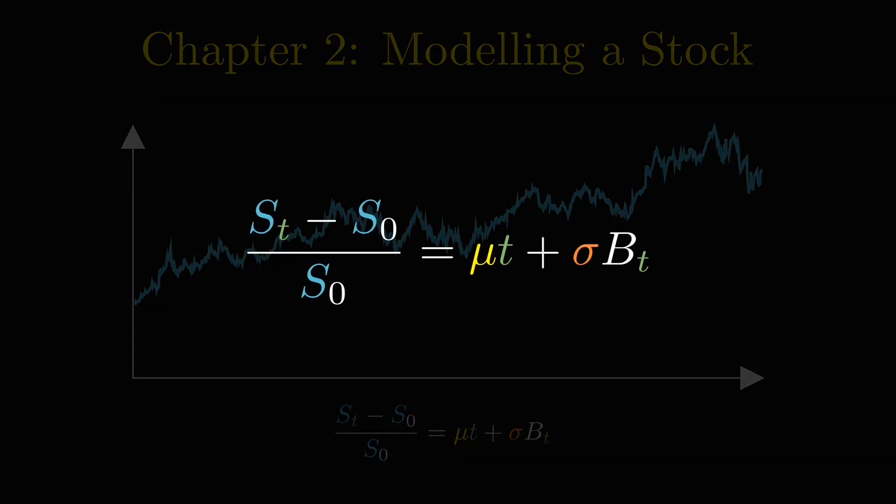We can rewrite this equation to show the percentage change at time t instead. Here, delta S_t represents the change in S_t in a very short interval after time t. When we take the limit as this interval gets smaller, we arrive at the stochastic differential equation for the stock. We call this a geometric Brownian motion.